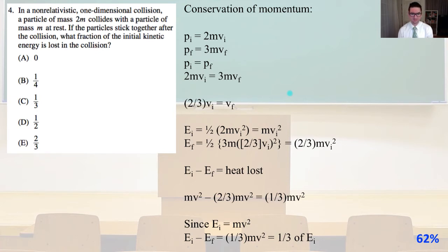The heat loss is initial energy minus final energy. So mvi² minus two-thirds mvi² equals one-third mvi². Since the initial energy equaled mvi², Ei minus Ef equals one-third of the initial energy. And so that is answer C.